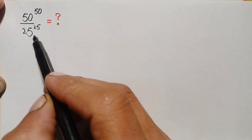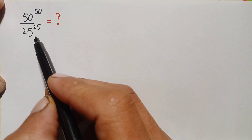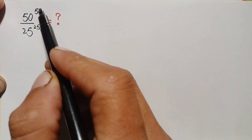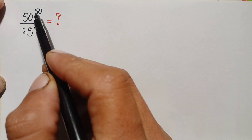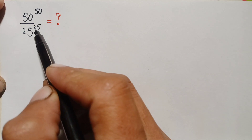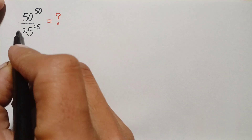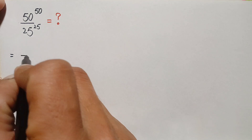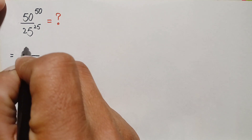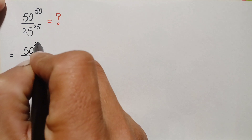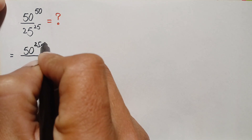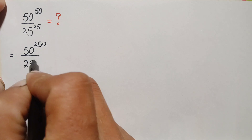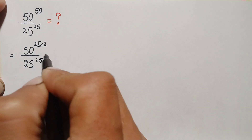I will solve this problem using two different methods. In the first method I will try to make their powers the same. For that we will factorize the power 50 and try to make it 25. So we can write 50 raised to power 50 as 50 raised to power 25 times 2, divided by 25 raised to power 25.